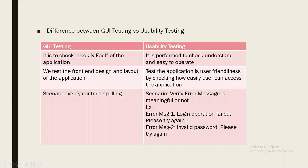Now the important question: the difference between GUI testing and usability testing. The intention of GUI testing is to check the look and feel of the application. The intention of usability testing is to check understandability and ease of operation. In GUI testing, we test the front-end design — the appearance and layout of the application, including the format and alignment of components in a page.